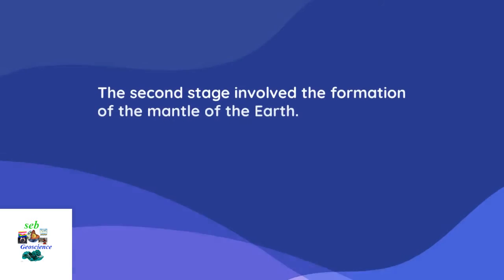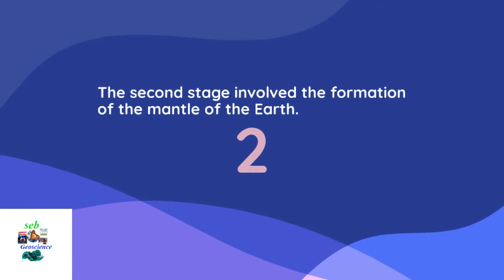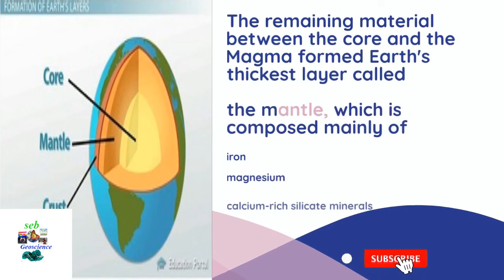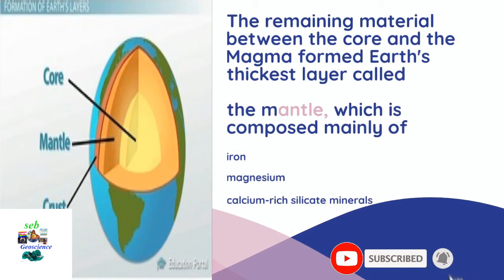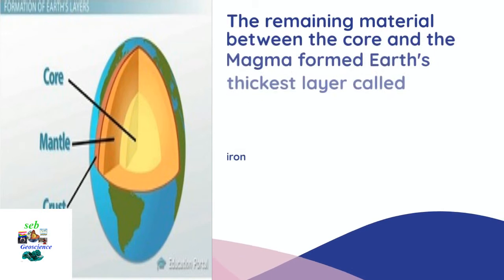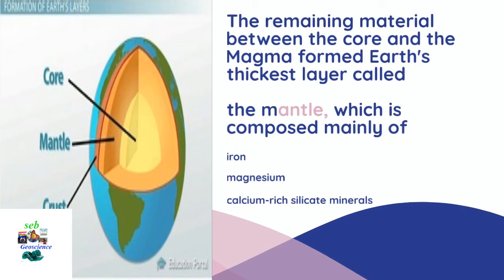Stage 2: Formation of the mantle. The second stage involved the formation of the mantle of the Earth. The remaining material between the core and the magma formed Earth's thickest layer, called the mantle, which is composed mainly of iron, magnesium, and calcium-rich silicate minerals.